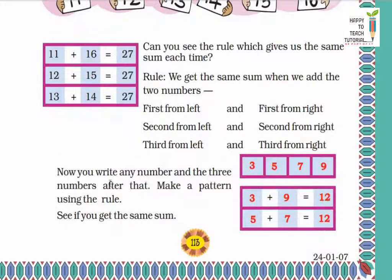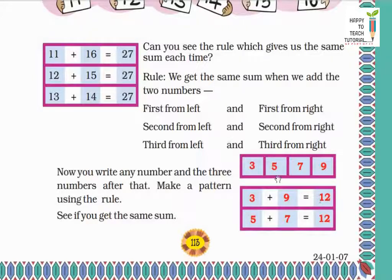Now you write any number and the three numbers after it to make a pattern using this rule. For example, I choose: 3, 5, 7, 9. First from left and first from right: 3 plus 9 equals 12. Second from left and second from right: 5 plus 7 equals 12. We get the same sum each time.